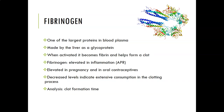Fibrinogen is one of the largest proteins in blood plasma, made by the liver as a glycoprotein. When activated it becomes fibrin and helps form a clot — fibrinogen is the inactive precursor of fibrin. Fibrinogen is elevated in inflammation (it is an acute phase reactant), in pregnancy, and while taking oral contraceptives. Decreased levels usually mean it is being consumed in the clotting process, as in massive clotting events, DIC, or pulmonary embolism. Analysis looks at clot formation time, usually using tissue thromboplastin.